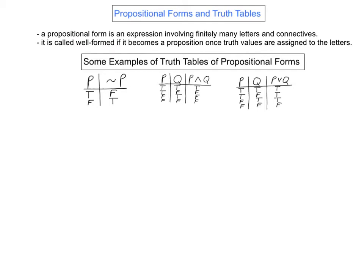For example, the negation of P, the conjunction of P and Q, and the disjunction of P and Q are examples of well-formed propositional forms. For each well-formed propositional form, we can construct its truth table, which gives the values of the propositional form as a function of the truth values of the letters in it. For example, here I've indicated the truth tables of the negation of P, the conjunction of P and Q, and the disjunction of P and Q.